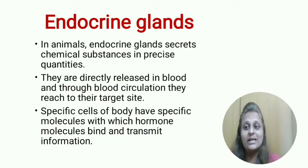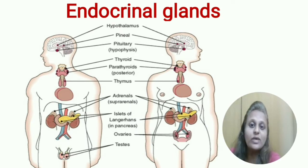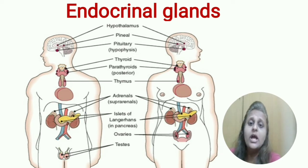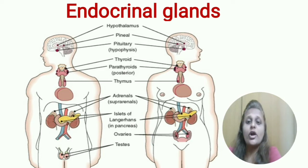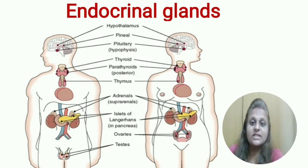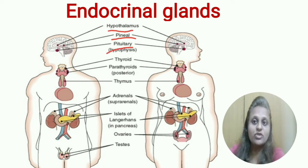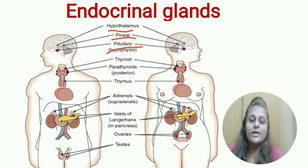Now we need to understand the locations of endocrine glands, because sometimes you have questions about which glands are present in which body part. The first location is the brain. Three glands are present in the brain: first, hypothalamus; second, pineal; and third, pituitary.